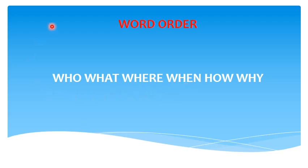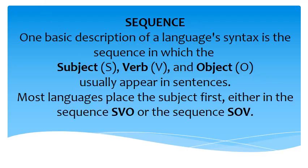Let's now move on to the rules of syntax, or the absolutely correct word order. One basic description of a language's syntax is the sequence in which the subject, verb, and object usually appear in sentences. Most languages place the subject first, either in the sequence subject-verb-object, or the sequence subject-object-verb.